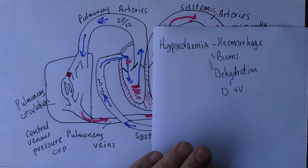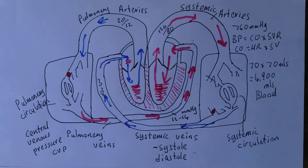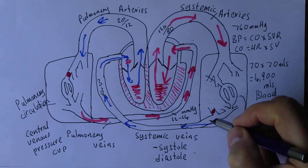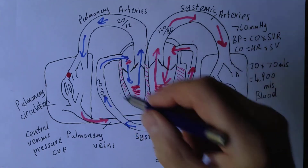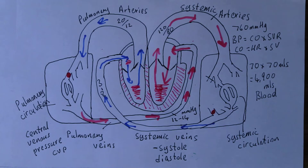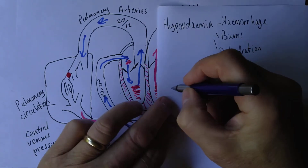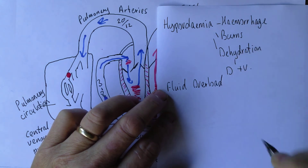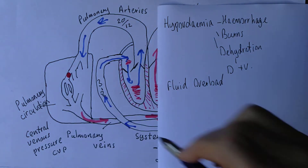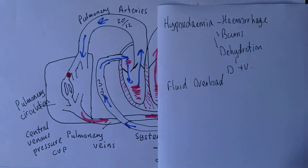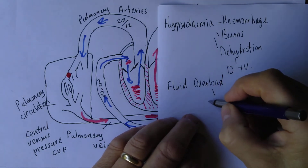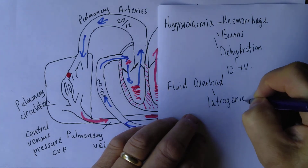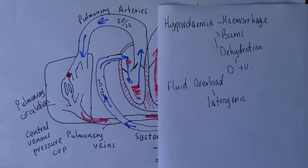In healthcare we often give intravenous fluids. When we give intravenous fluids, those fluids are going into the systemic veins — the veins in the arm are systemic veins. If we give too much, that can lead to fluid overload, where there's too much fluid in the veins, and we can get an increase in systemic venous pressure. This is usually caused by something we do wrong in healthcare, so it's called an iatrogenic disorder.